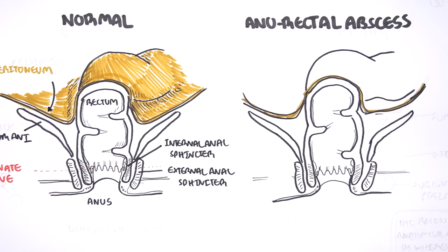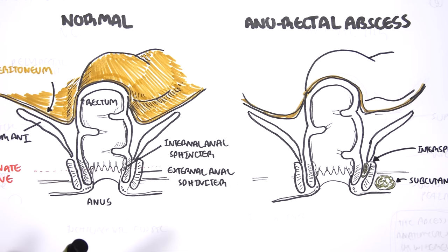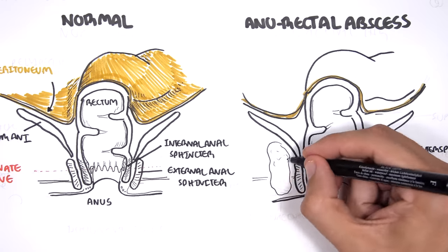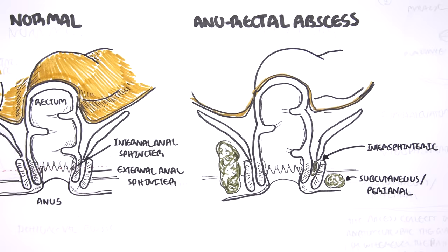For example, the abscess that is formed between the internal and external sphincter are called the intersphincteric abscess. Abscess just below the skin and confined to the superficial subcutaneous layer are called subcutaneous or perianal abscess, and these are the most common.